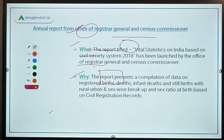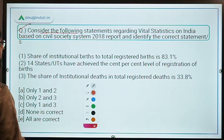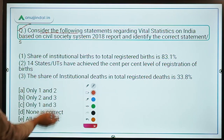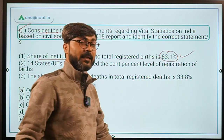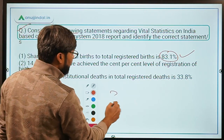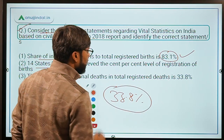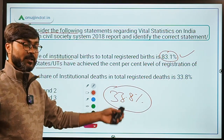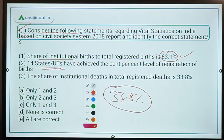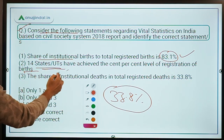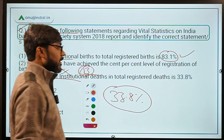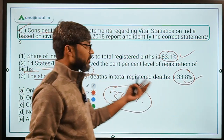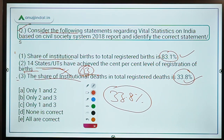Evaluating the statements for question 3: share of institutional births to total registered births is 83.1% — correct. Share of institutional deaths to total registered deaths is 33.8% — correct. The claim that 14 states or UTs achieved 100% birth registration is incorrect — it is 13. So statements one and three are correct, making option C the correct answer. For question 4, the number one state in sex ratio based on registered births is Arunachal Pradesh with a sex ratio of 1,084, followed by Nagaland and Mizoram, with Manipur at the lowest.